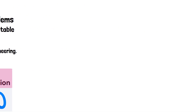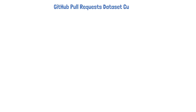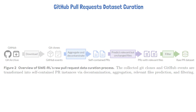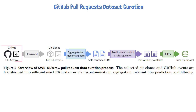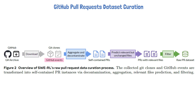To train the model, the researchers curated a dataset of pull requests from GitHub. We can learn about the curation pipeline using a figure from the paper. The source of the data is GitHub Archive, a project that tracks all public activity on GitHub. So rather than just code, it also provides issues, comments, pull requests, and more.